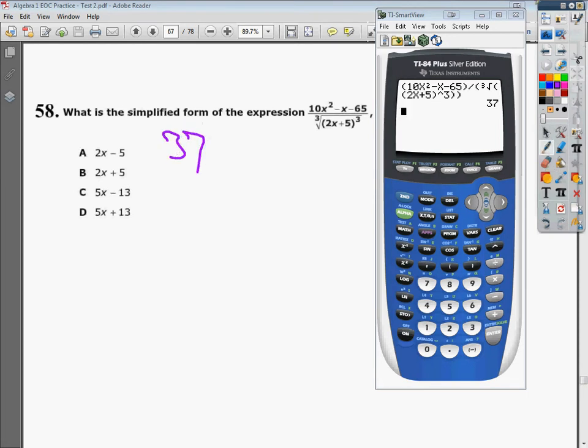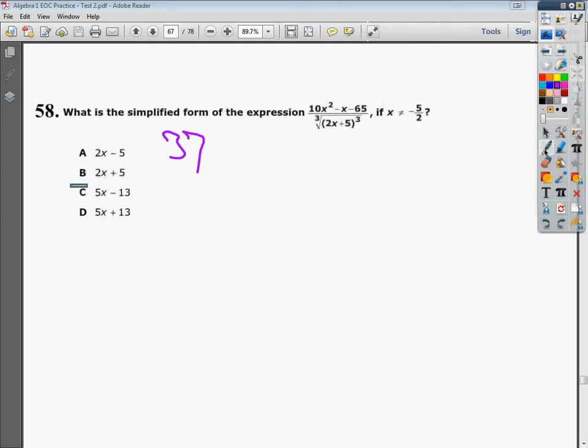So I try 2x minus 5. So I'll type in 2x minus 5. And that one doesn't work. So I'll type in 2x plus 5. Also no. But when I try 5x minus 13, gives me 37. So I know that my answer choice and my question are the same. So once again, I can say that C is the correct answer to number 58.